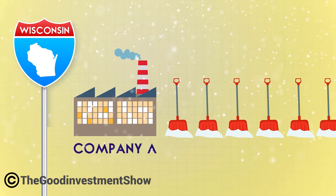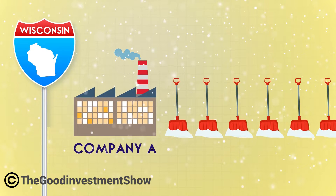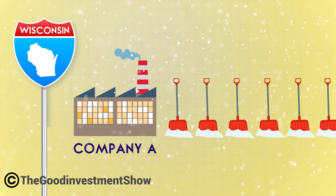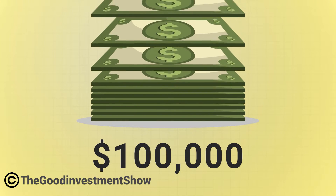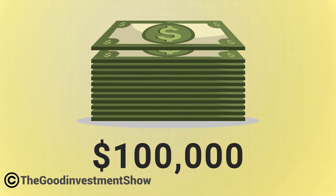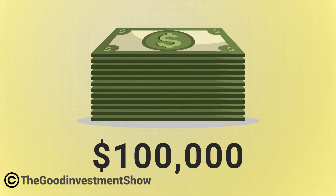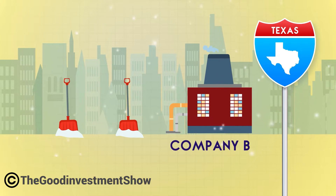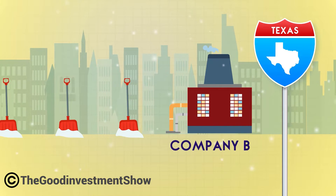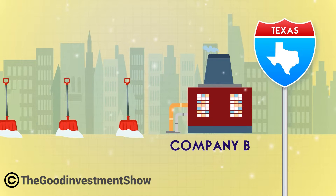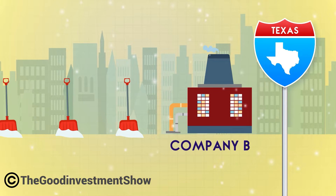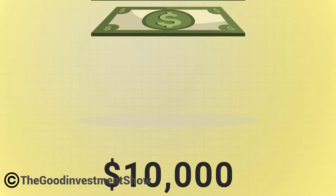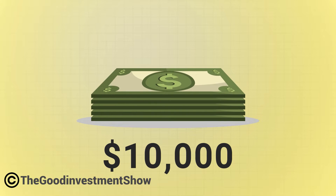Let's say Company A is located in Wisconsin, which gets a lot of snow. Therefore, Company A sells a lot of shovels and earns a profit of $100,000 a year. Company B is located in Texas. While Texas is a big state with a high population, it doesn't receive much snow. Therefore, Company B only earns a profit of $10,000 a year.